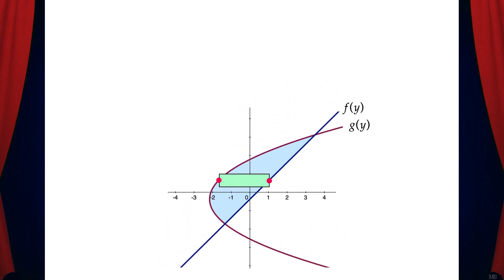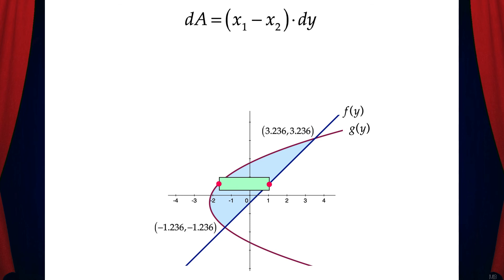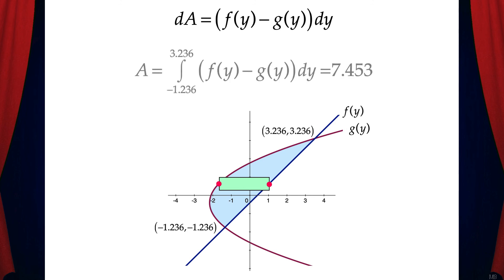That means dA, the area of one rectangle, is x1 minus x2 times dy, which is f(y) minus g(y) dy. And that means the area of the shaded region is the definite integral from -1.236 to 3.236 of f(y) minus g(y) dy. Note that the limits of integration are y values. We can solve this with a calculator and we get 7.453.